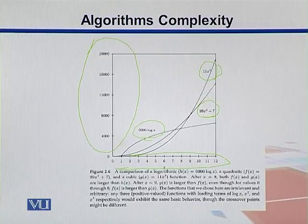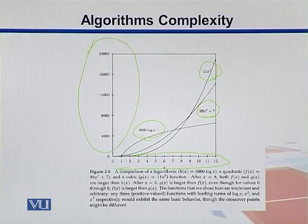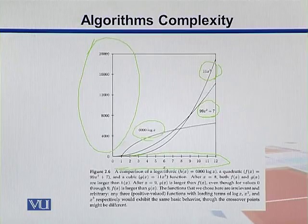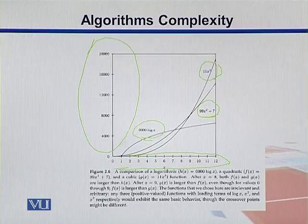If we look into those small constants, like 6,000, 11, 99 something, plus 7, under small inputs they might be having some effects. But if the input size is increased, we would see that these figures, these additional figures, they might not mean much to our problems.